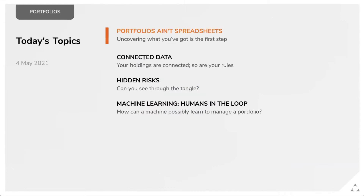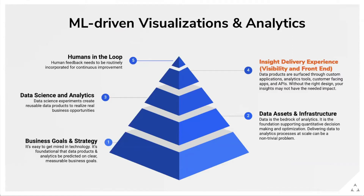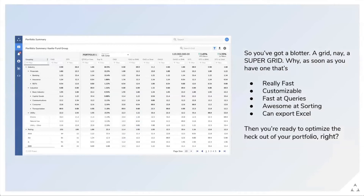I'm going to start with a topic called 'Portfolios Ain't Spreadsheets,' which is about what happens after you have some insights and speaks to the current state of the art in applications people use to manage portfolios. How many people just want a super grid — the best blotter they've ever built? Tools like Adaptable, AG Grid — and one of my favorite super grids is called Excel. This is the state of the art in a lot of portfolio management.